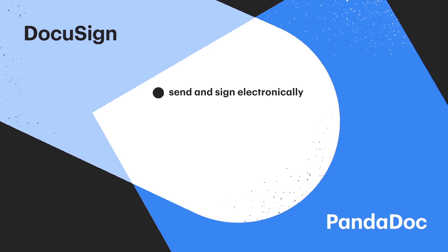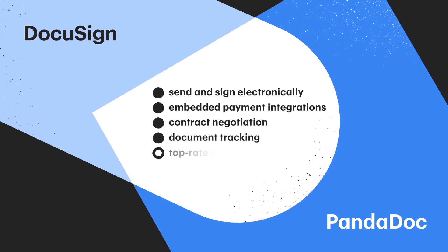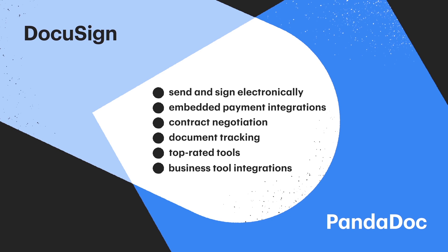Let's start by looking at the overlapping features and capabilities that PandaDoc and DocuSign share. Both tools allow you to create and upload documents and send them for electronic signature. They both have embedded payment integrations, contract negotiation features, and document tracking and analytics. They are both top-rated on TrustRadius, Capterra, G2, and GetApp, and both have native integrations with major CRMs like Salesforce, HubSpot, Pipedrive, Copper, and Microsoft Dynamics, along with tools like QuickBooks, Zoom, Slack, and Monday.com.